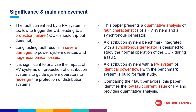This page shows the significance and the main achievements of this paper. The fault current fed by a PV system is too low to trigger the circuit breaker, leading to a protection failure — that is, the overcurrent relay should trip but does not. The long-lasting fault results in severe damages to power system devices and huge economic losses. Therefore, it is significant to analyze the impact of PV systems on protection of distribution systems to guide system operators to redesign the protection of distribution systems.